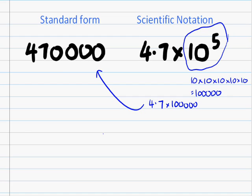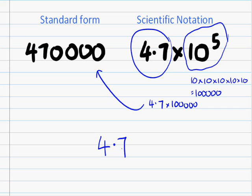The first thing I would generally do is write down the 4.7. Whenever you're multiplying by anything like 10, 100, 1,000, or 100,000, all you're doing is moving a decimal place.